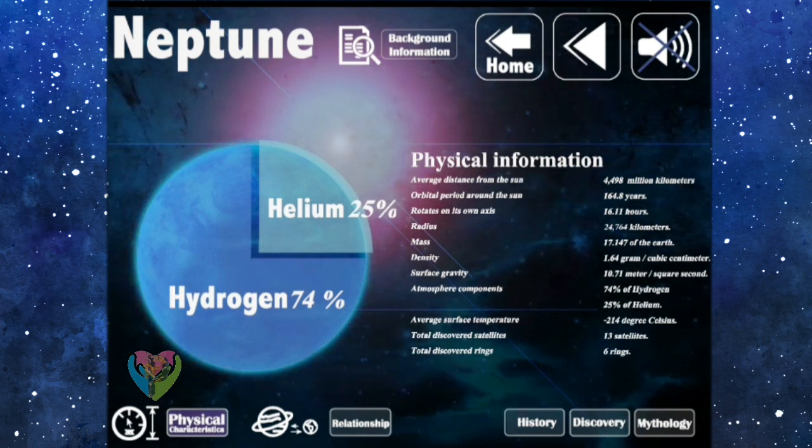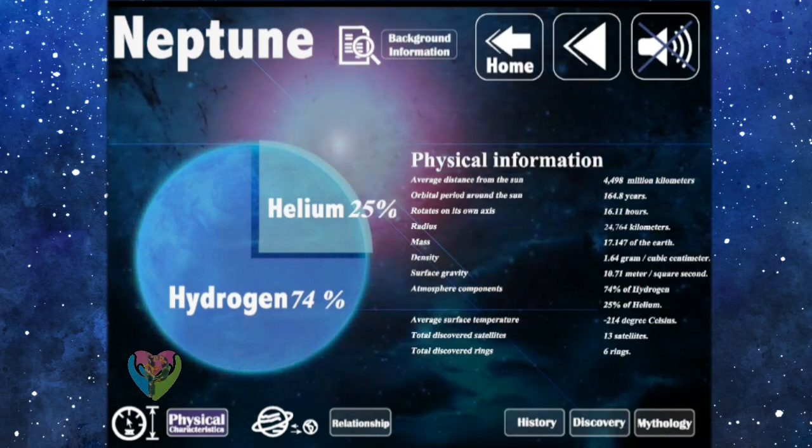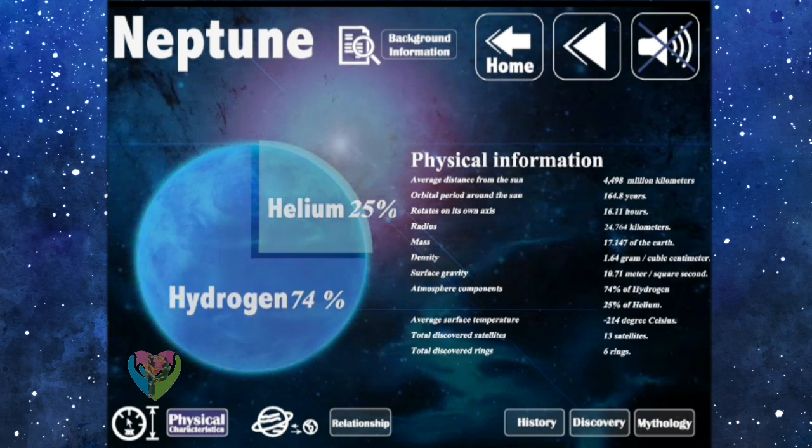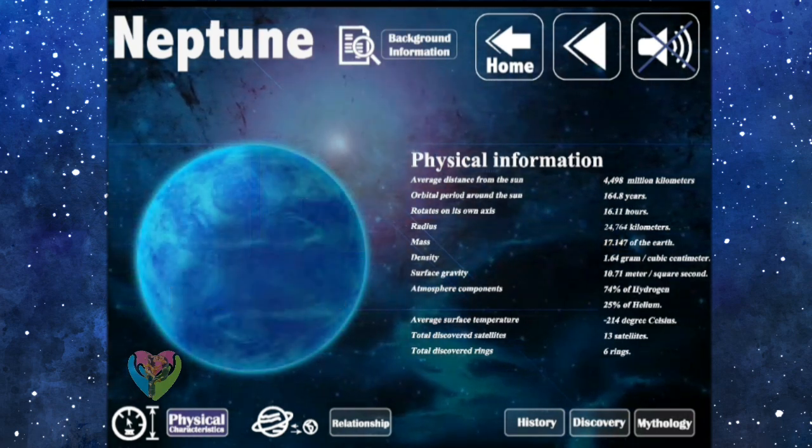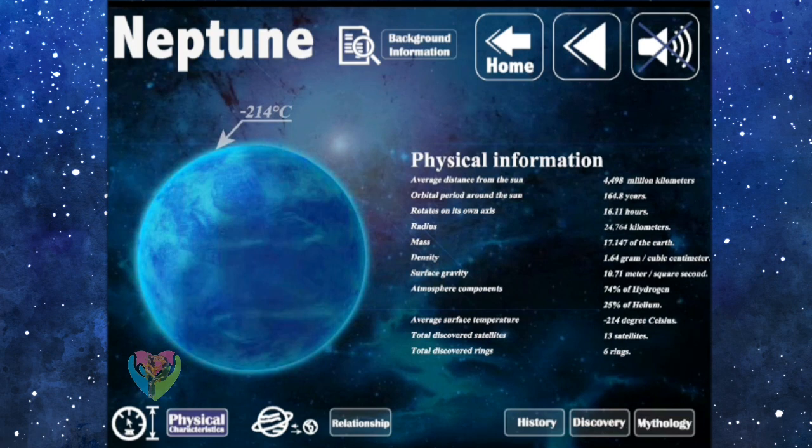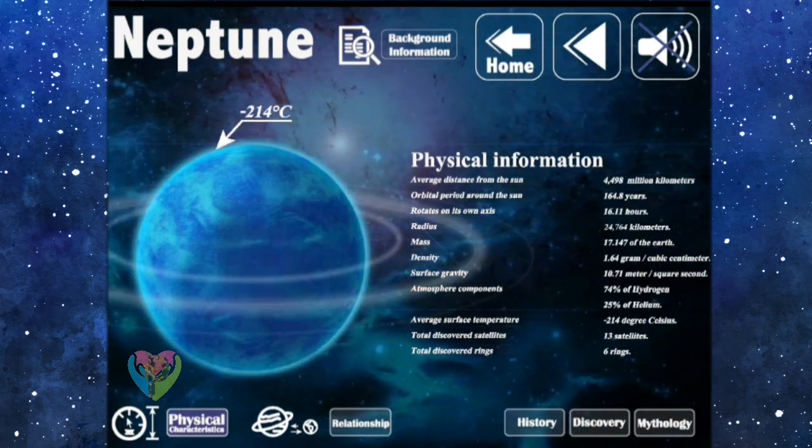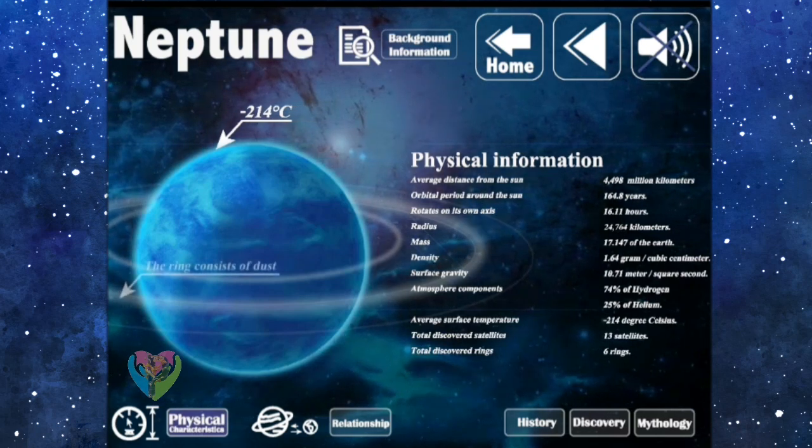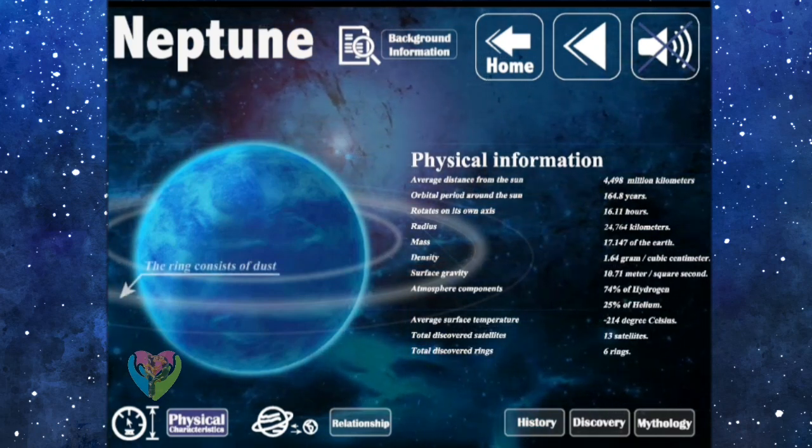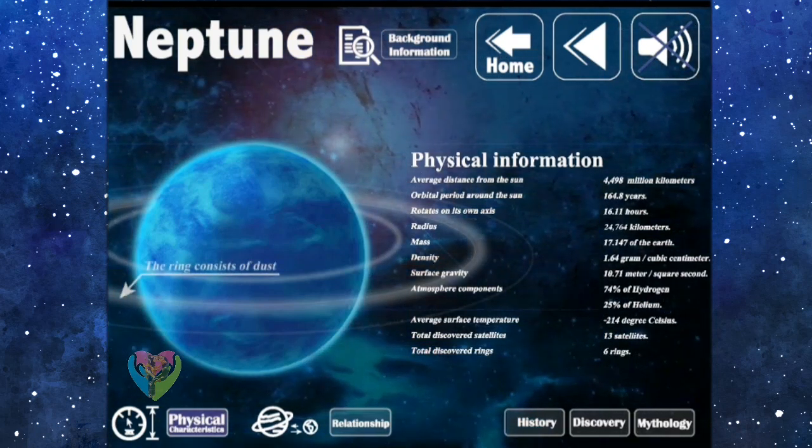The atmosphere components consist of 74% hydrogen and 25% helium. The average surface temperature is negative 214 degrees Celsius. The total discovered satellites are 13. The total discovered rings are 6.